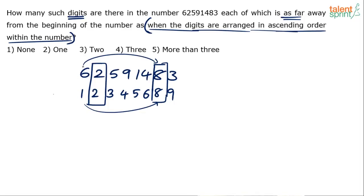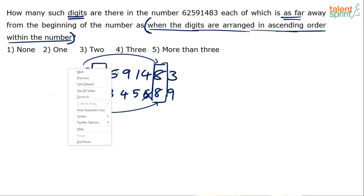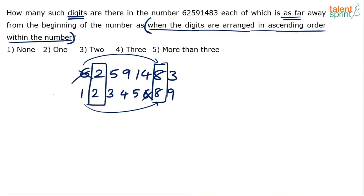If you see digit 6, it is in first position in the original number but in the ascending order number digit 6 is in sixth position, so 6 is ruled out. Digit 5 is third from the beginning in the original number, but fifth from the beginning in the ascending order number, so cancel. Digit 9 is fourth from beginning in the original, eighth from beginning in the ascending order — cancel. Digit 1 is fifth from beginning in the original, first from beginning in the ascending order — cancel. Digit 4 is sixth from beginning in the original, fourth in the ascending order — cancel. Digit 3 is eighth from beginning in the original, third in the ascending order — cancel.